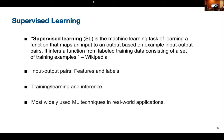In supervised learning, you have a set of input-output pairs called features and labels — features are inputs, labels are outputs. You train based on these features and labels and infer a model used to make predictions. Supervised learning is the most widely used machine learning technique, accounting for over 95% of today's applications, because it's feasible in the short term and relatively easy to implement.